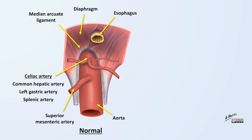In addition, there are two paired structures called the celiac ganglia, which are nerve bundles in the area adjacent to the celiac artery. The ganglia are responsible for sending signals from the autonomic nervous system to the GI system, and for sending signals — specifically pain — from the gut back to the brain.